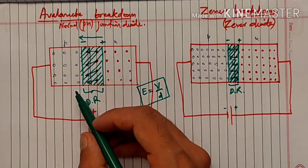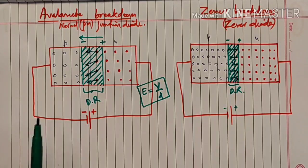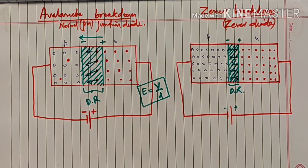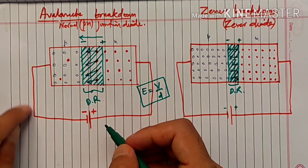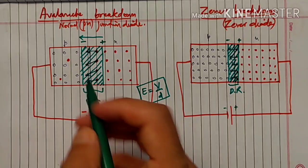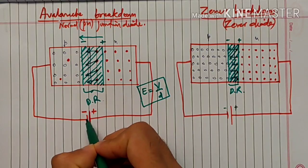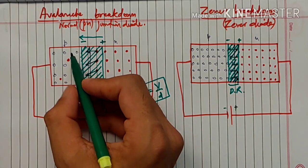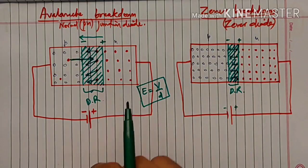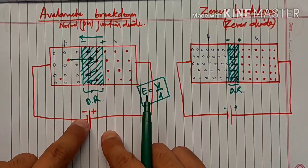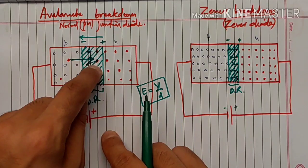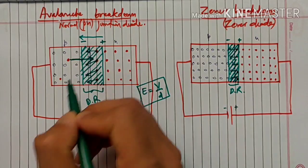यहाँ पे minority carriers भी होंगे - P region में minority carriers electrons होंगे। जब आपने reverse biasing की - यह negative potential electrons को repel करेगा depletion region की तरफ। जब आप reverse bias को high करते जाते हो, तो यह electron high kinetic energy gain करेगा और depletion region की तरف जाएगा।